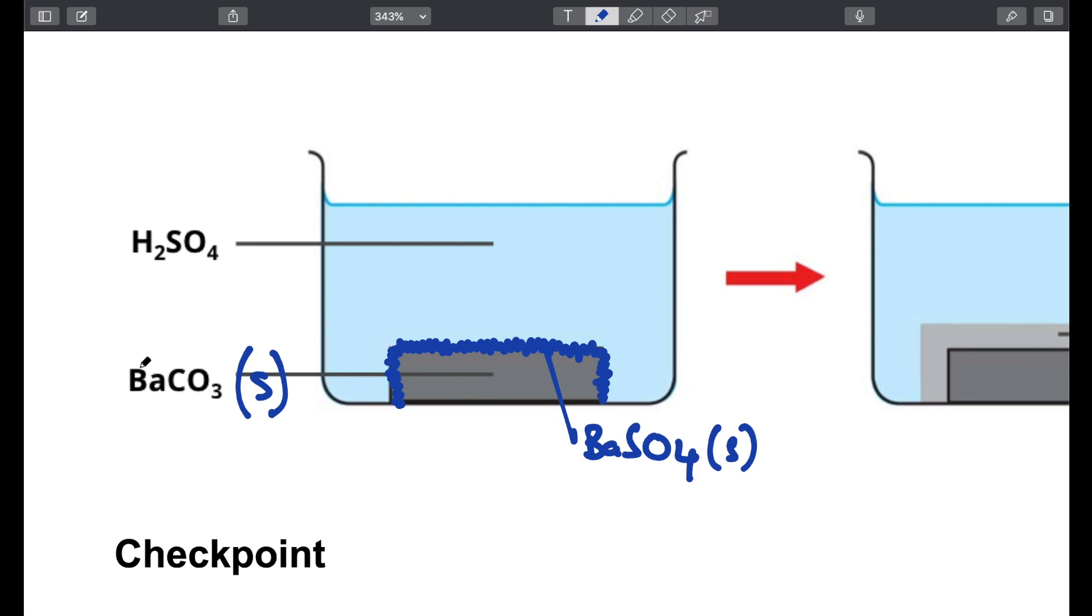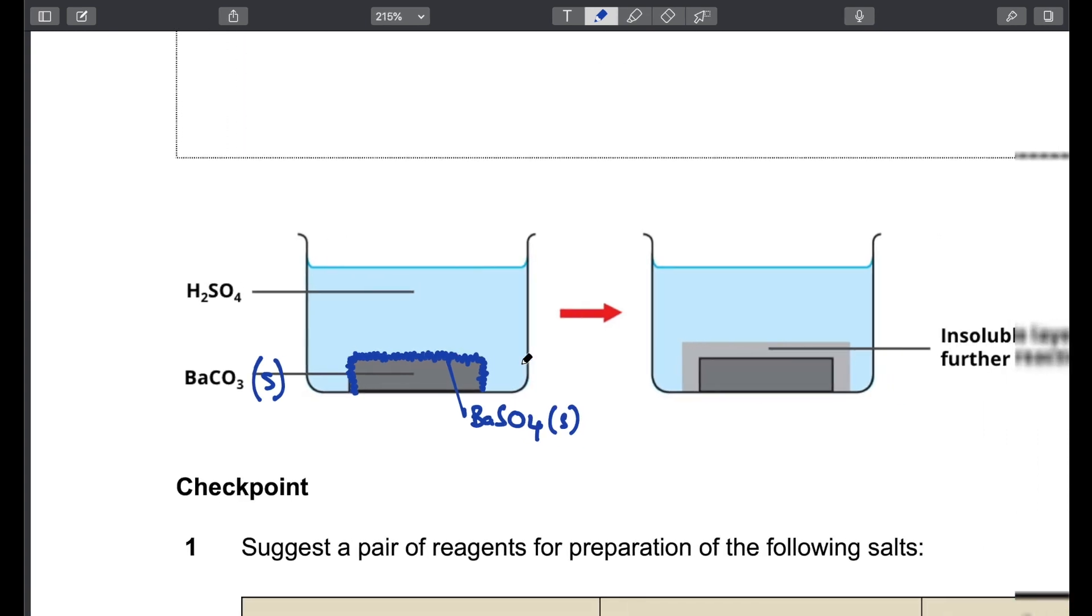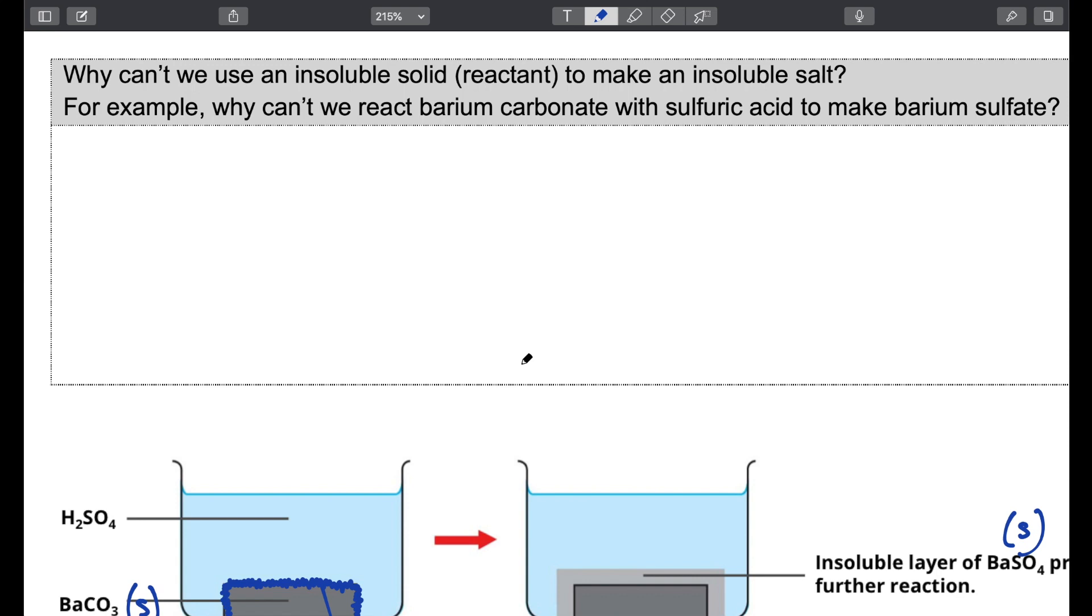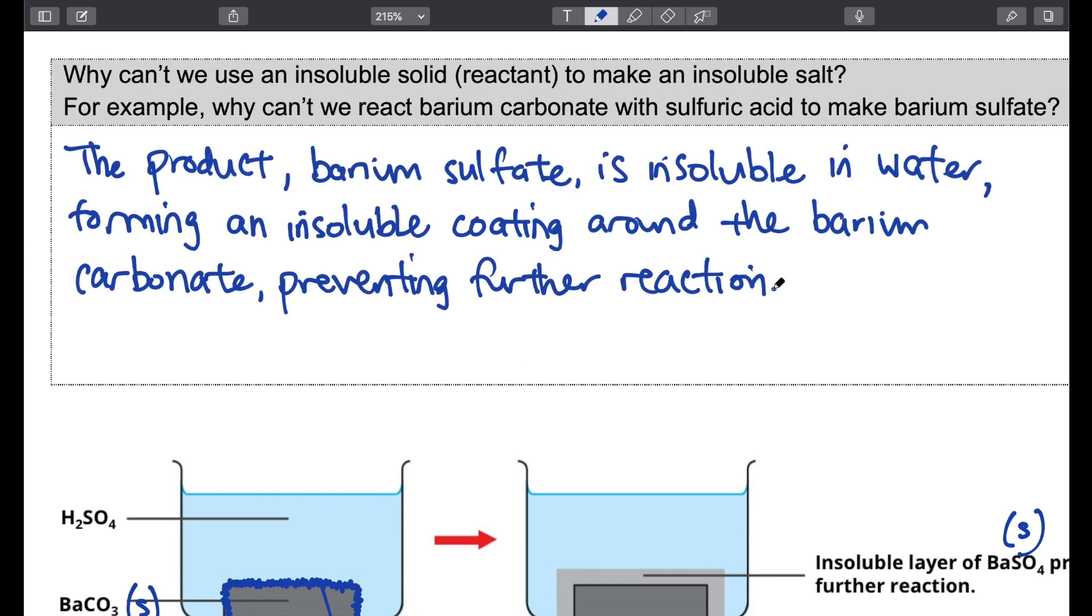So whenever we are dealing with an insoluble salt, you cannot start with a starting reagent that is insoluble. It's something you need to bear in mind. So insoluble salts can only be prepared by precipitation. We say that the product barium sulfate being insoluble forms an insoluble coating around the starting material, which is barium carbonate, preventing further reaction from taking place.